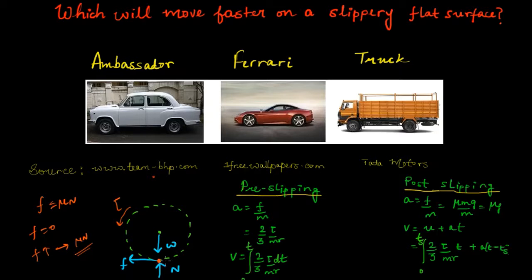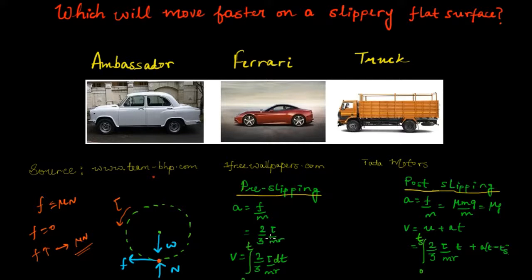From the previous video, the pre-slipping linear acceleration of the vehicle is given by (2/3) × torque / (m × r), where m is mass and r is radius. The key point is that before slipping, acceleration depends on torque: the higher the torque, the higher the acceleration, and the faster your car moves. When we accelerate a normal car, we increase torque, which increases acceleration and velocity.